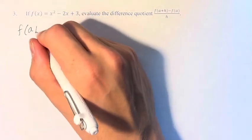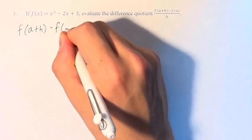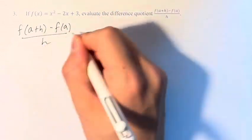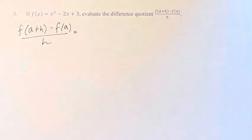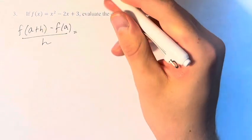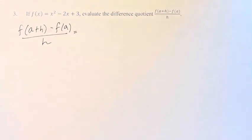So the basic idea behind this is that we are seeing the change in the function over a period of h divided by the length of that period.